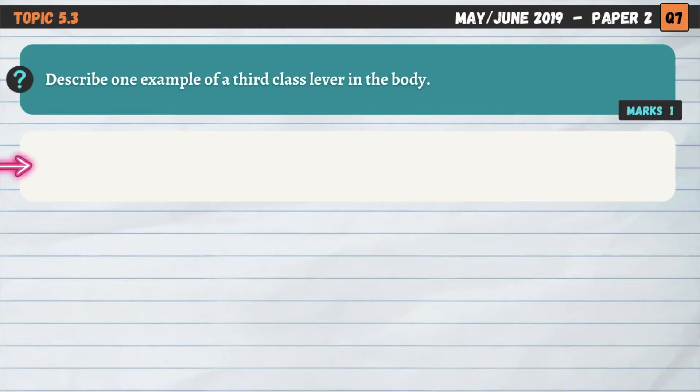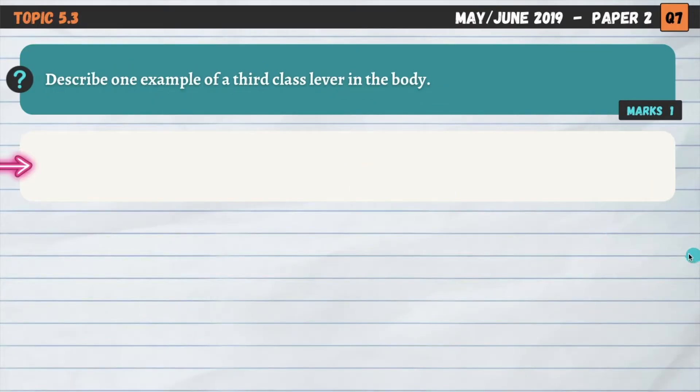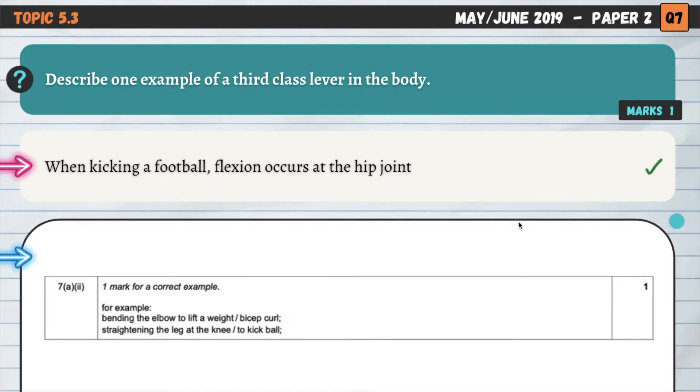If we go back to look at the orientation of these three components, the fulcrum in that example would be the hip joint—the ball and socket joint at the hip. Then the effort would be coming from those muscles that create flexion at the hip, so the hip flexors and the quadriceps. And then resistance is going to come from the weight of the leg and the resistance that comes from the football as it's kicked. So when kicking a football, flexion occurs at the hip joint. That is a third class lever in action. We could have also gone for bending the elbow to lift a weight, bicep curl being the most obvious example there, or straightening the leg at the knee when we kick a football.